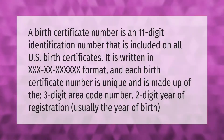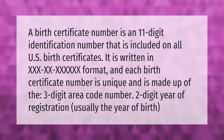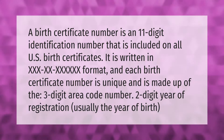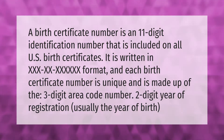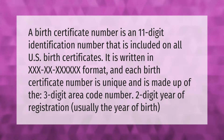A birth certificate number is an 11-digit identification number that is included on all U.S. birth certificates. It is written in XXXXXXXXXXX format and each birth certificate number is unique, made up of a three-digit area code and a two-digit year of registration.